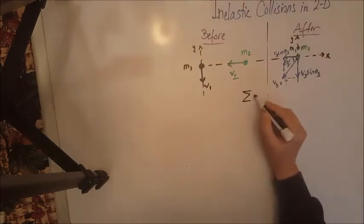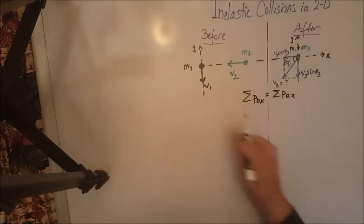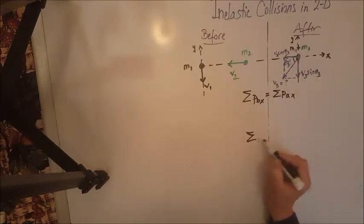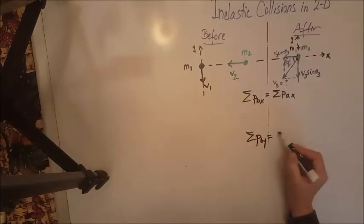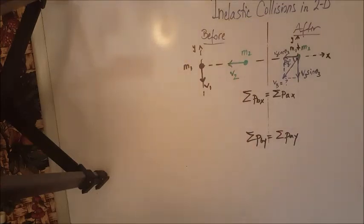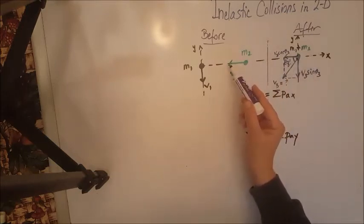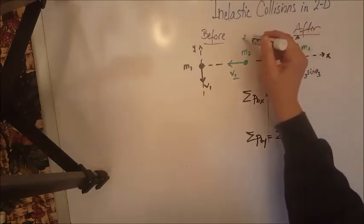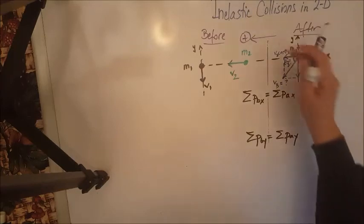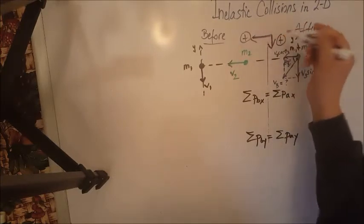Now let's write the two equations for conservation of momentum. Total momentum before collision on the X equals total momentum after collision on the X — leave some room to develop this further — and the same for Y: total momentum before collision on the Y equals total momentum after collision on the Y. We need to pick positive directions for both X and Y. For the X, I see two vectors going to the left, so I pick left as positive. For the Y, I have two vectors going downwards, so I pick downwards as positive.